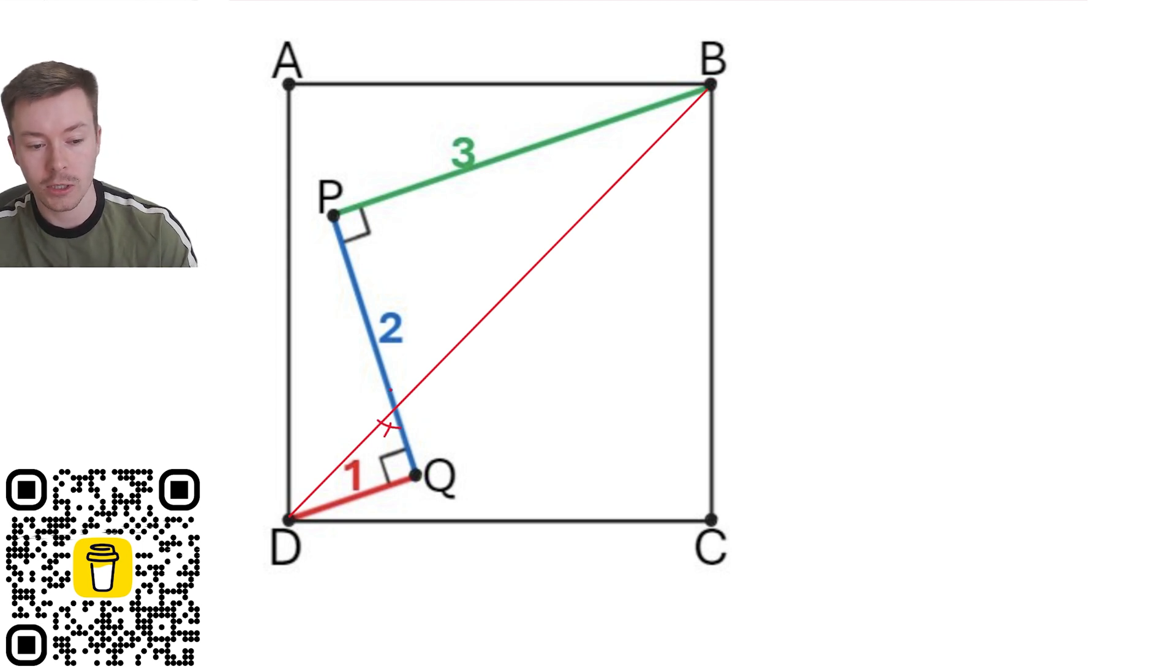Because they're vertically opposite, those two angles are the same. And then because they're right angle triangles, you've got your right angle, we've got one angle that's the same. So this remaining angle must also be the same.